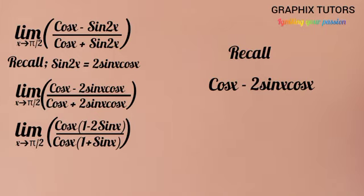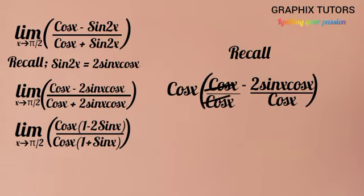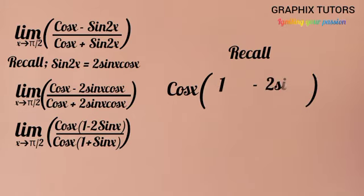Now if I bring cos x out, it means I'm going to divide both sides by cos x. Cos x will cancel cos x to remain 1, and cos x remains with 2 sin x. That is why I'm having 1 - 2 sin x. The same thing applies to the denominator.